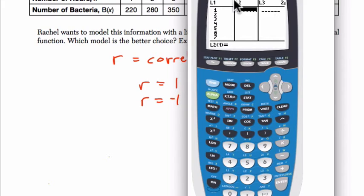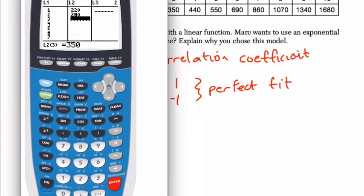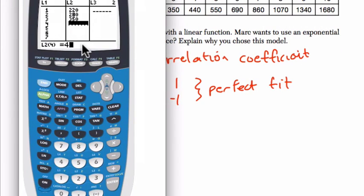Now I enter the number of bacteria, 220, 280, and 350. Let me just slide this over. Okay, we've got 440, 550, 690. Okay, then we have 860, and then 1,070, 1,340, and 1,680. And oops, entered those two wrong. 1,340, and 1,680. Boom.